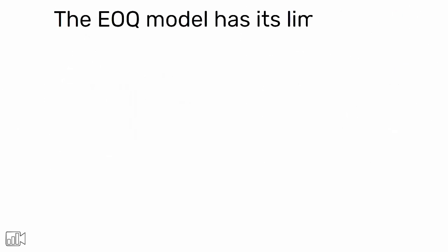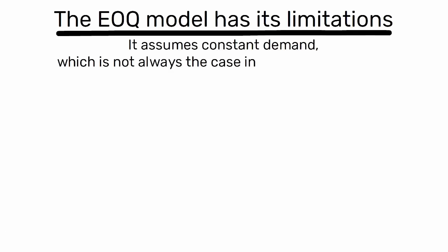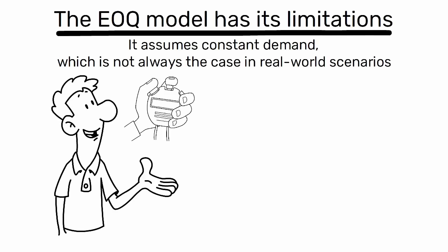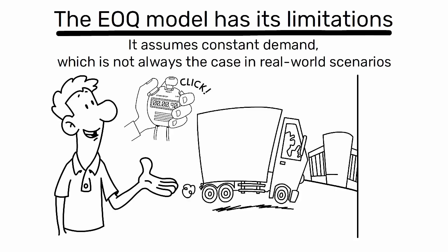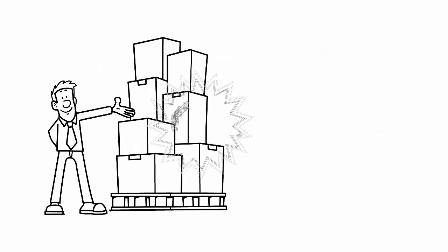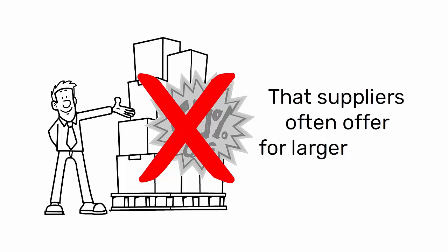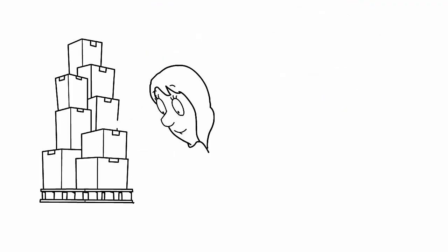However, the EOQ model has its limitations. It assumes constant demand, which is not always the case in real-world scenarios. It also assumes immediate delivery of inventory, which may not always be possible. Furthermore, it does not consider quantity discounts that suppliers often offer for larger orders.